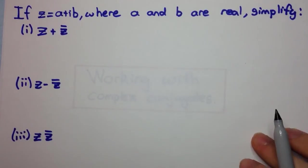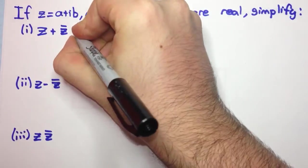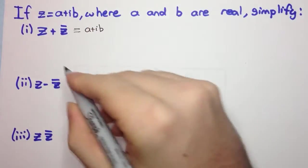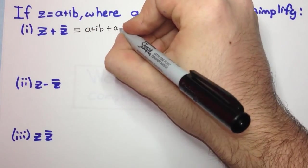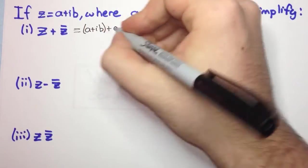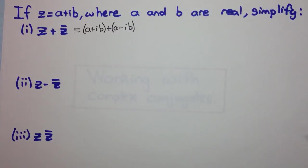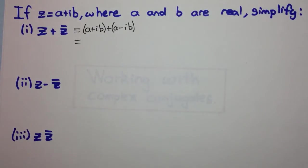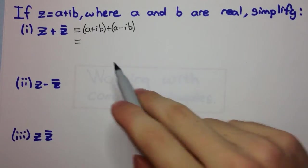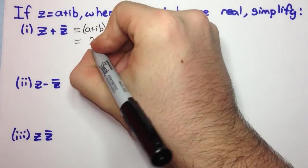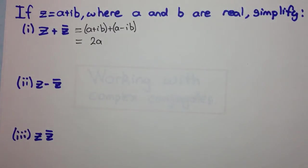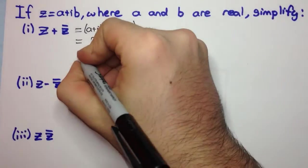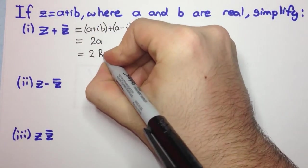Looking at z plus z bar: z is a plus ib, and z bar is a minus ib. We add complex numbers as if we were collecting like terms of an algebraic expression. So here we have a plus a, which is 2a, and ib minus ib, which is of course zero. So z plus z bar equals 2a, and we can recognize that this is twice the real part of z.